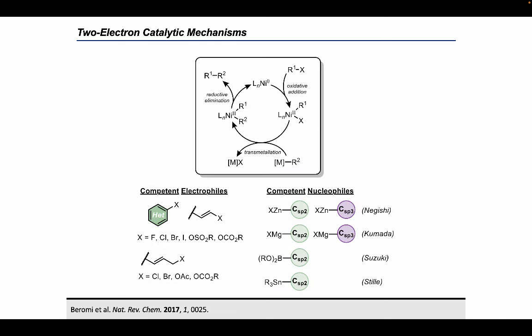As we begin to explore some of the specific nickel-catalyzed transformations, we'll first examine those that operate via two-electron mechanisms. All of the classical sp2-sp2 cross-coupling nucleophiles, including organozincs, Grignards, boronates, and stannanes, that are used with palladium, can also be integrated into nickel catalysis with a wide range of competent electrophiles. So the obvious question is: in which instances would nickel be a more attractive catalyst than palladium?